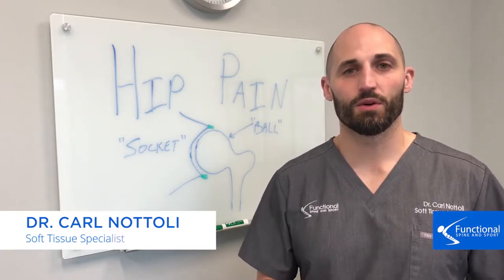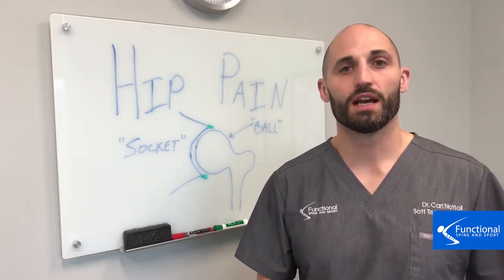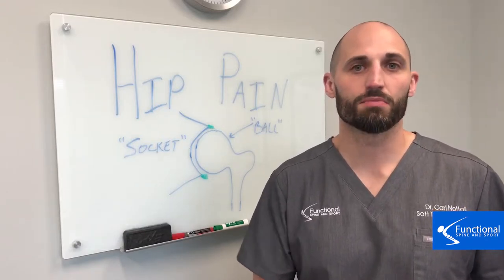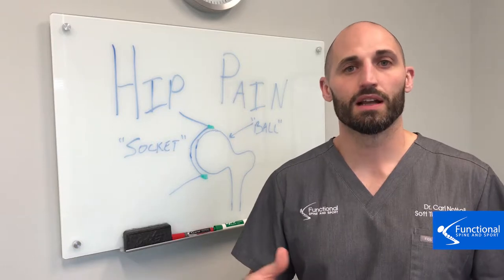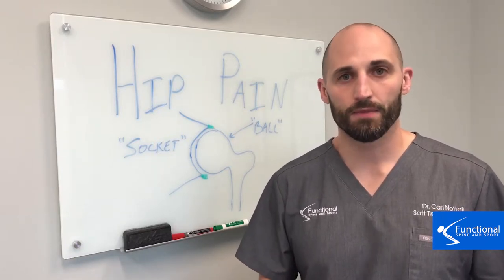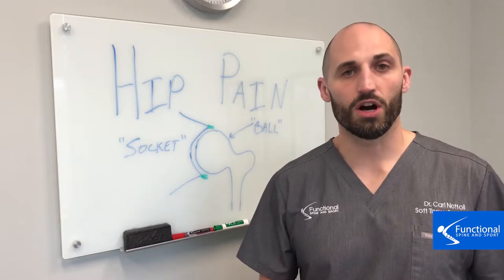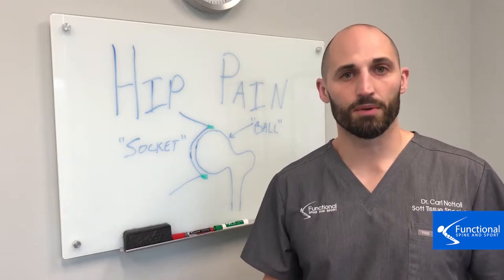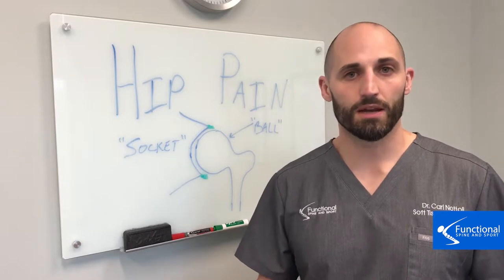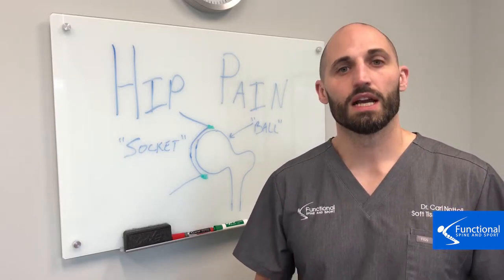In our first video, we talked about overuse injuries to the soft tissues that develop adhesion. Adhesion in the soft tissues makes your muscles less flexible and weaker, and that can lead to hip pain. Secondary to that, if you have enough adhesion and it's been there long enough, it can develop into osteoarthritis, cartilage, or labrum defects, and that can cause pain as well.